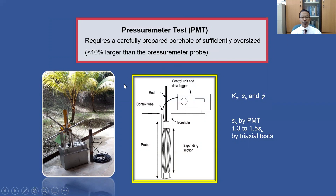Pressure Meter Test. To perform this test, a borehole is required. The equipment includes a probe and a control unit with a compartment to store liquid, normally oil. When the handles are rotated, the oil is pumped through a tube into the probe, causing it to expand. The probe consists of a rubber membrane protected by strips of thin metal, which protect the membrane from being punctured by sharp objects in the borehole, such as sharp rocks or vegetative residues.